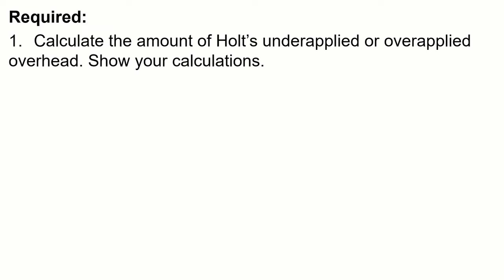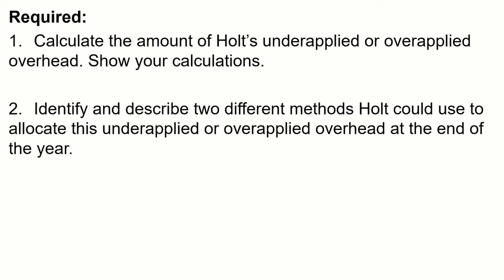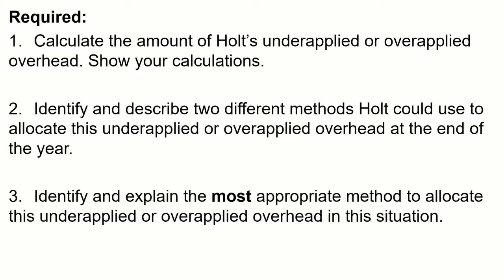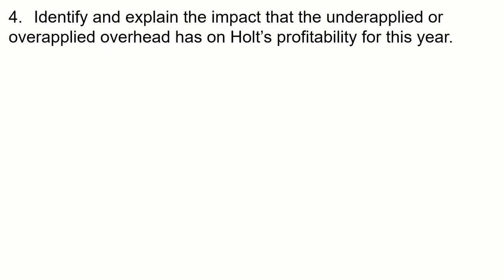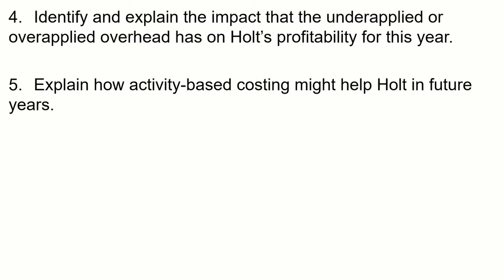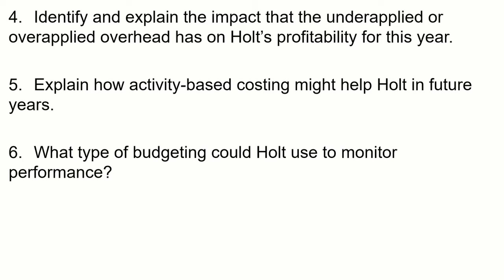Looking at the six requirements: first, calculate Holt's underapplied or overapplied overhead; second, identify and describe two different methods Holt could use to allocate this at year end; third, identify the most appropriate method for this situation; fourth, explain the impact on Holt's profitability; fifth, explain how activity-based costing might help in future years; and sixth, what type of budgeting could Holt use to monitor performance. Some requirements are theoretical, some require calculation.